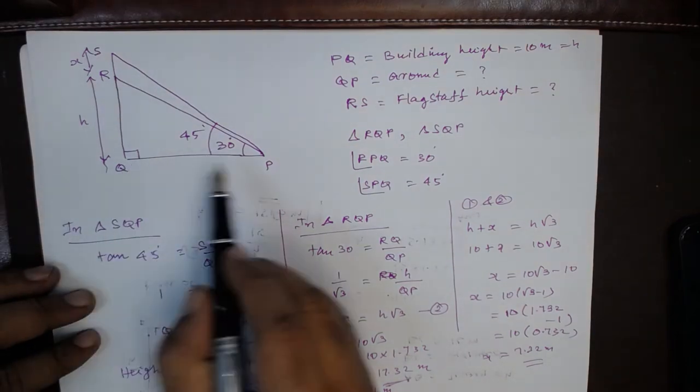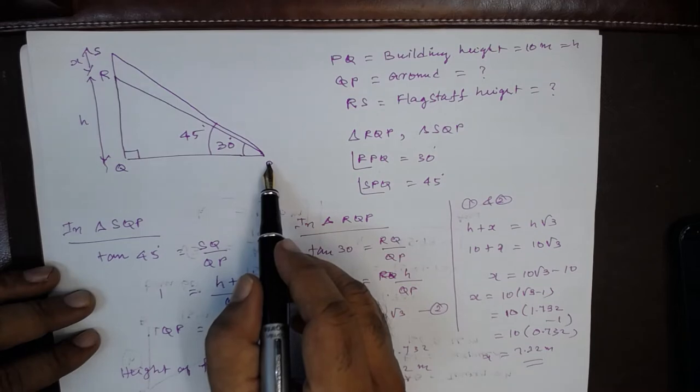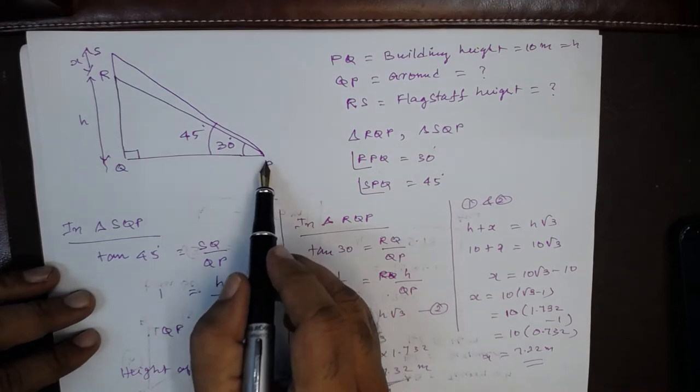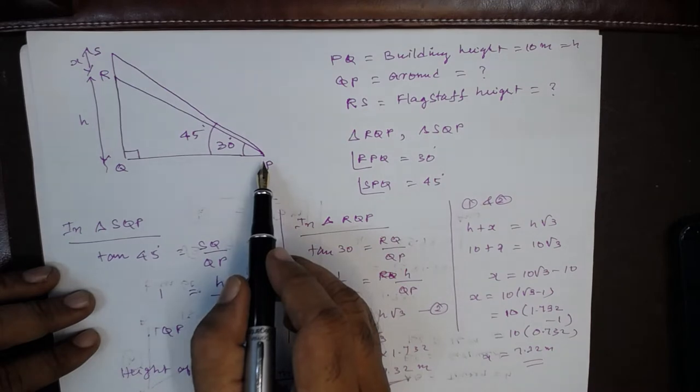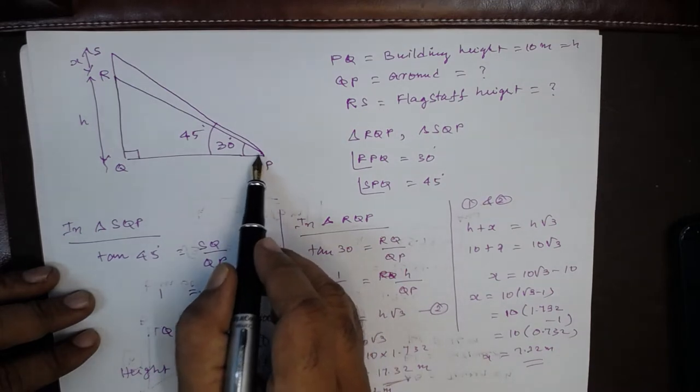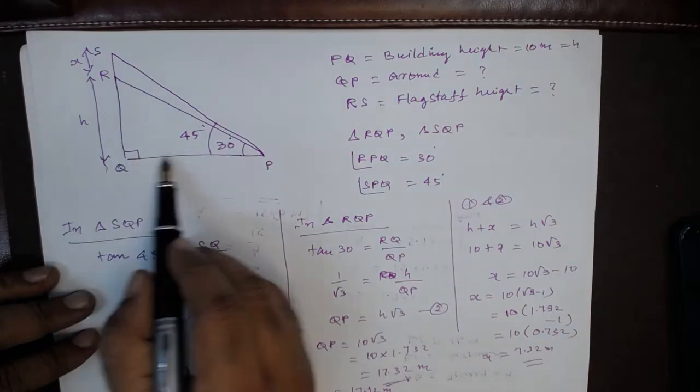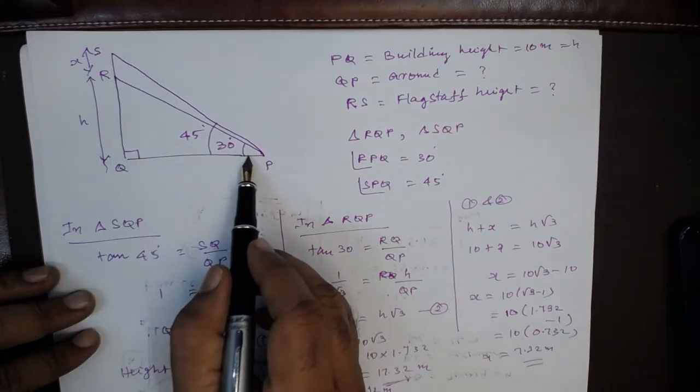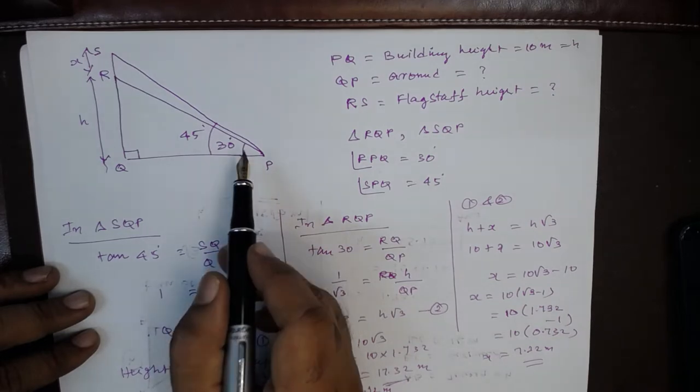From a point P on the ground, the angle of elevation of the top of a 10 meter tall building is 30 degrees. So RQ is the building and the angle of elevation is 30 degrees. A flag is hoisted at the top of the building.